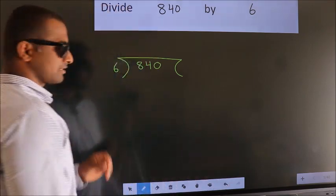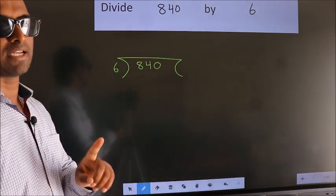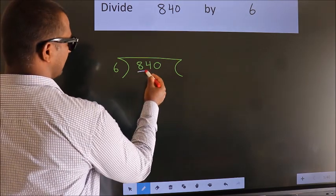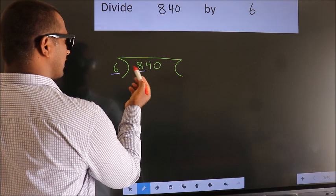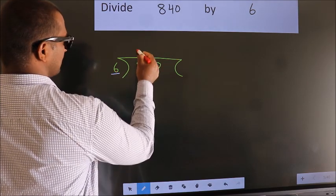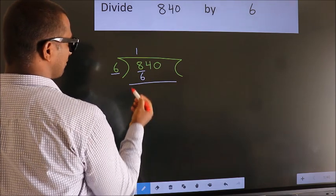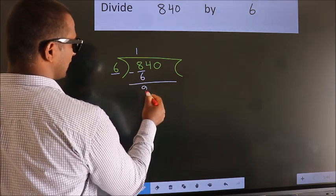This is your step 1. Next, here we have 8, here 6. A number close to 8 in 6 table is 6 once 6. Now, we should subtract. We get 2.